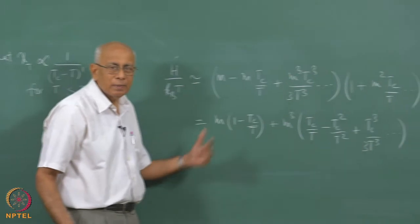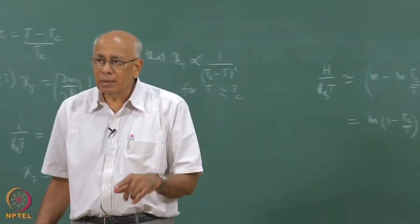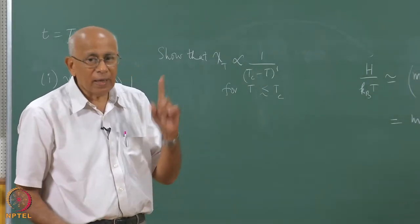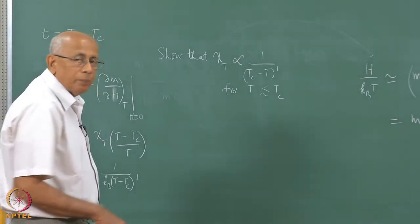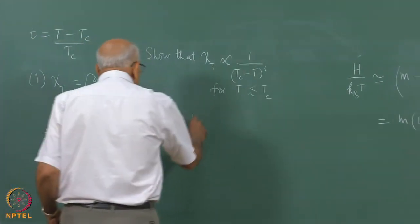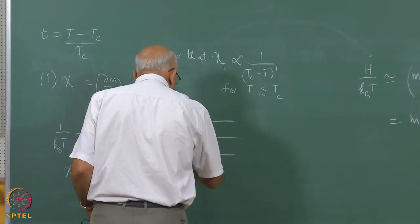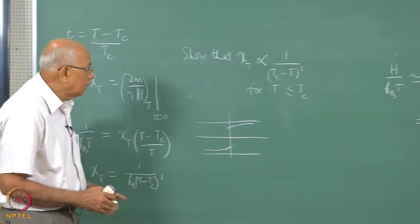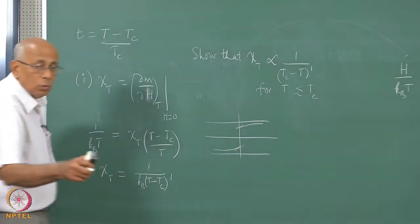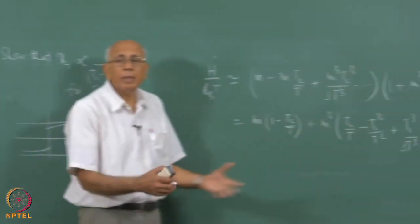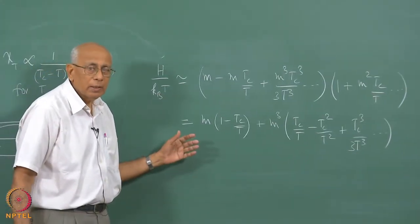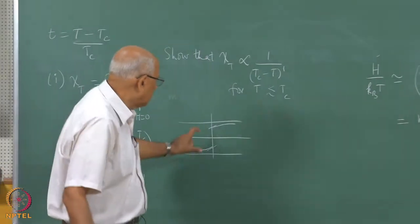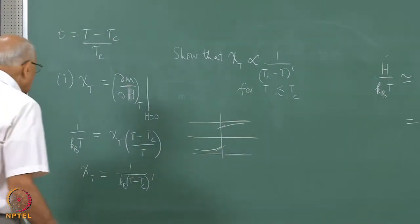For T less than T_c you have to solve the cubic equation, because the susceptibility is the slope at a point where M is not zero but has a finite intercept. Below the critical point, the stable roots are M not equal to 0 in the absence of a field — these are the spontaneous magnetization roots. Either of the two non-zero roots will give the same slope.